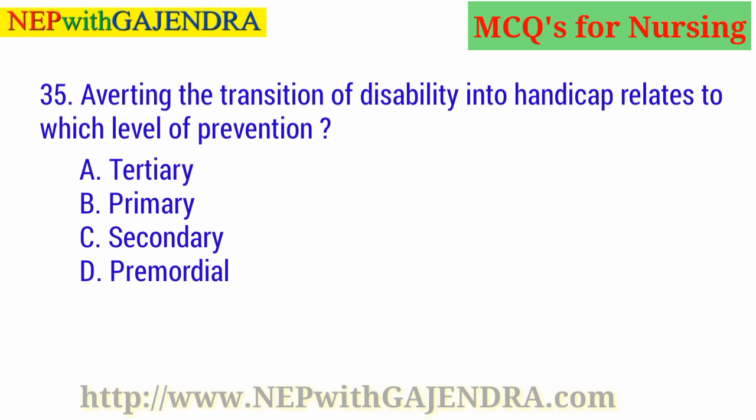Rehabilitation belongs to which level of prevention? A. Tertiary. B. Primary. C. Secondary. D. Primordial. The right answer is A: Tertiary.